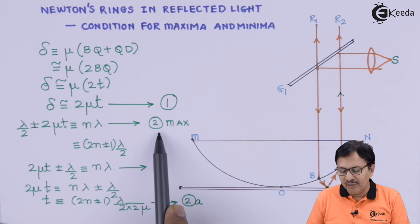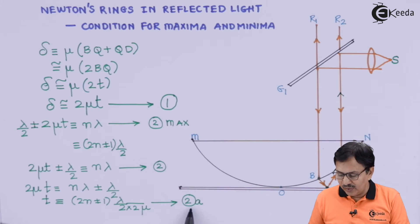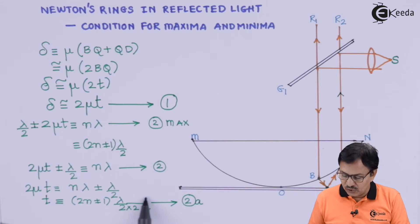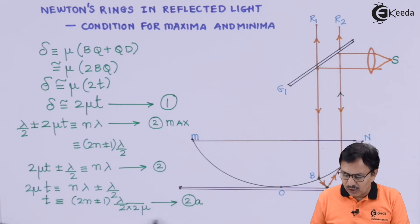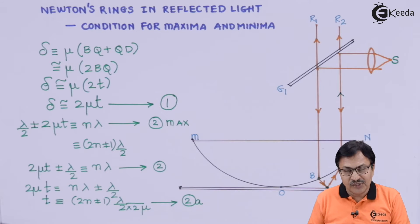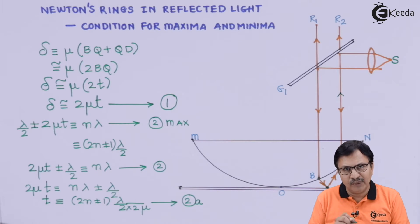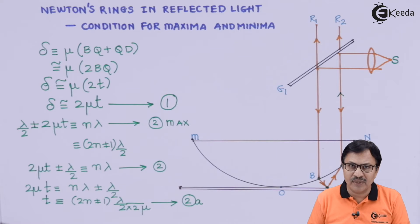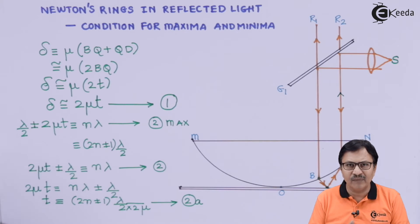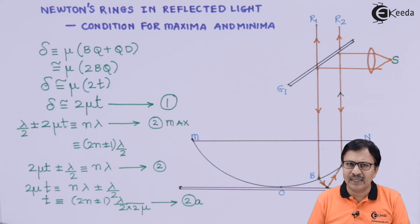This is the final expression for the thickness at which there will be maxima — that is, for a particular thickness at which constructive interference occurs and a bright Newton's ring will actually appear.